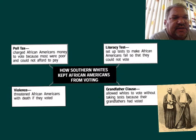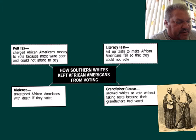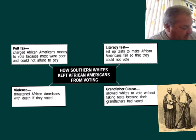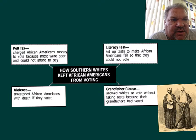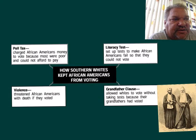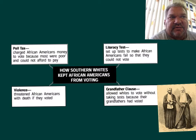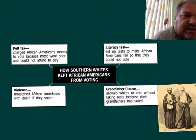Now we're going to discuss another topic called Jim Crow Laws. If you want to reference this in your book, they talk about the Jim Crow Laws on page 560. They also could be called Black Codes, Jim Crow Laws, or Segregation Laws, because that's basically what they were — they were segregation laws.